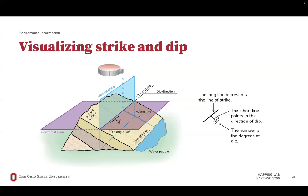The strike of an inclined or tilted surface is a line formed where the surface intersects a horizontal plane, like the surface of a water puddle. In this illustration, the strike would be recorded as North 65 East. Dip is the angle and direction that water flows or a ball rolls down an inclined surface. In this example, the dip is 30 degrees southeast. The T-shaped symbol is used to represent the strike and dip of an inclined surface.